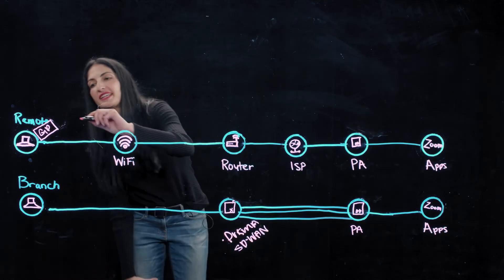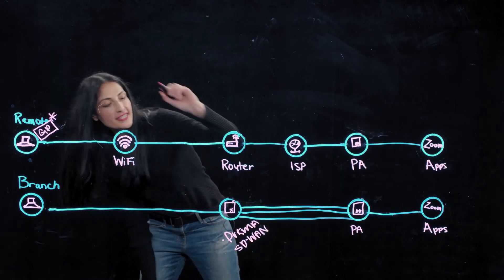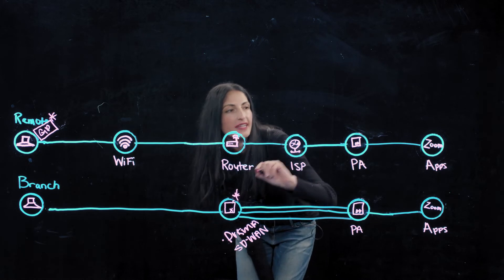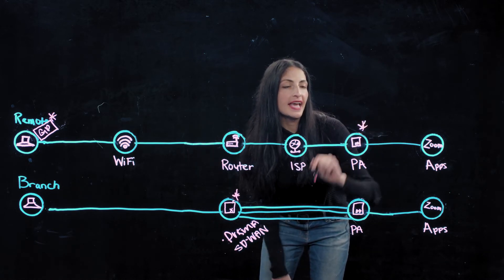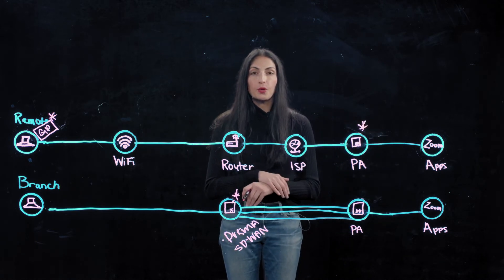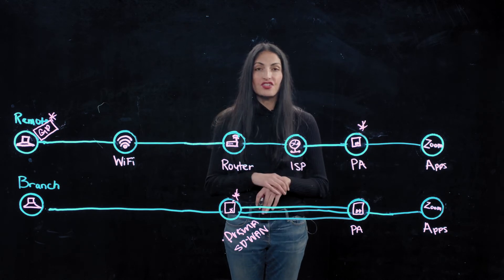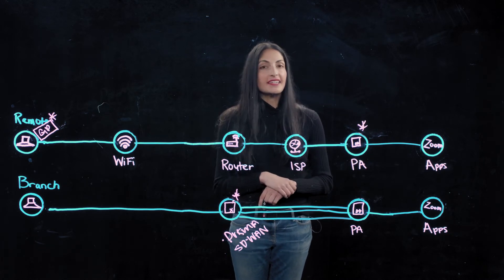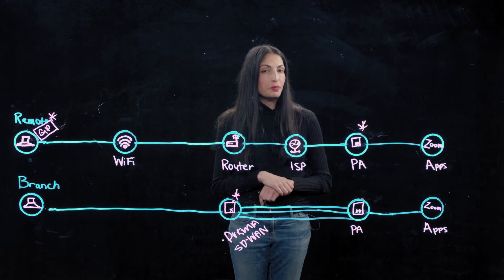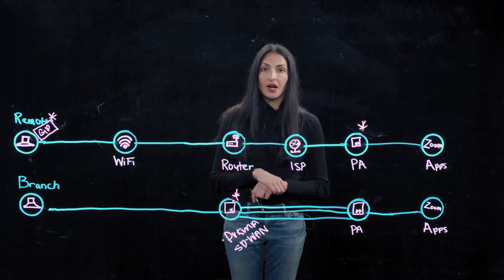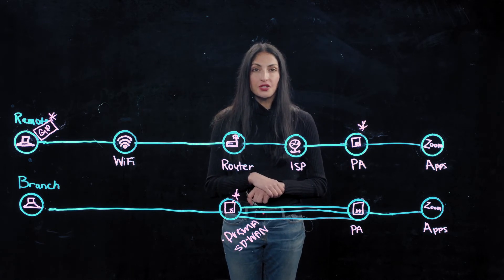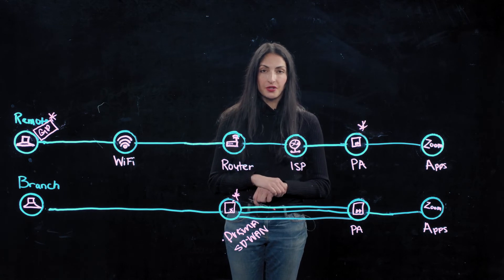Palo Alto Networks gives you this visibility, and the best part is you don't have to install anything new. ADEM is integrated into Global Protect, Prisma SD-WAN, and Prisma Access, and that makes it super easy to roll out to all your users within just a few clicks. If there is a problem, you'll be able to quickly isolate the root cause and notify impacted users immediately about any resolutions.